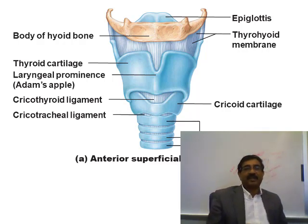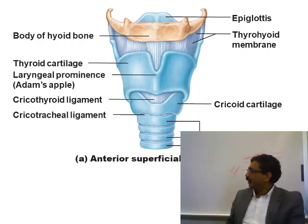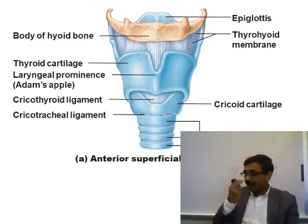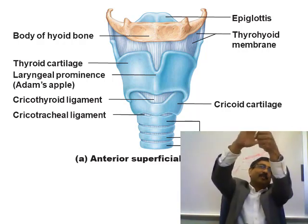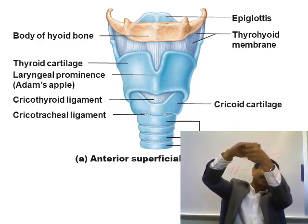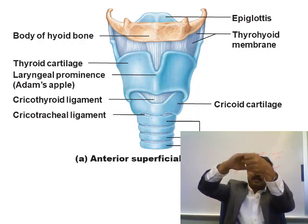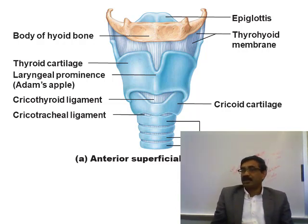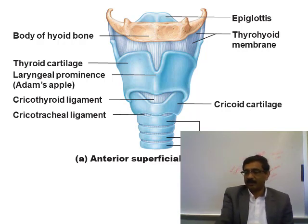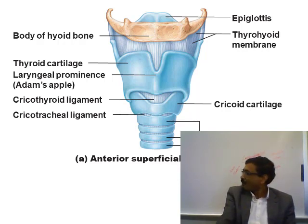The paired cartilages are the arytenoid, cuneiform, and corniculate cartilages. There is also the epiglottis, which is the cap of the laryngeal inlet. Remember that all these cartilages are hyaline except the epiglottis, which is elastic cartilage — that's why it can move to open and close.